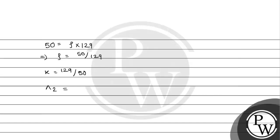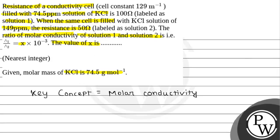So lambda 2 will be 1000 multiplied by 129 divided by 50 divided by concentration, that is 149. So the units will be Ω⁻¹·m⁻¹·ppm⁻¹.